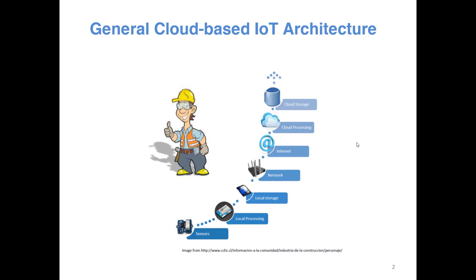For example, when measuring temperature you are only interested if the temperature goes beyond a certain value — only then do you want to send it to the cloud. You will do some local processing, and you will also store data locally, maybe on an SD card or local hard disk, in case something happens to the cloud. That filtered data is then sent to the cloud through the internet, reaching the cloud platform. You can use different cloud platforms — one of the most popular nowadays is AWS from Amazon, and there are others like Microsoft Azure. In the cloud you can do analytics, store data, or send it via email or SMS to interested parties.